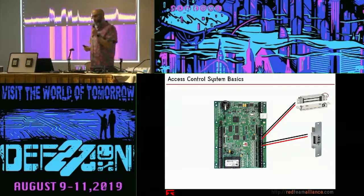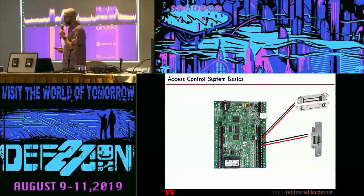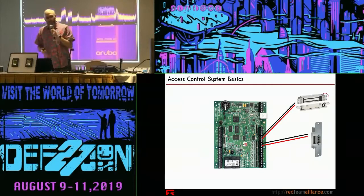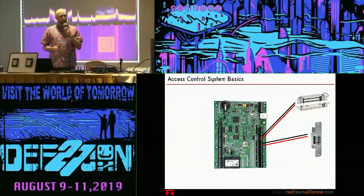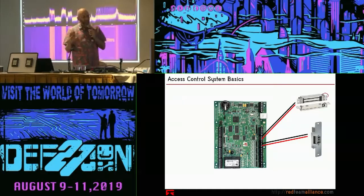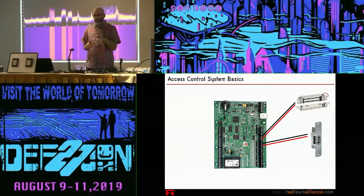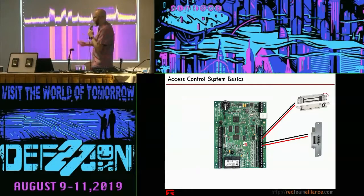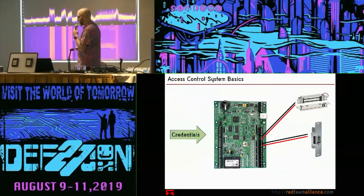What we're looking at here is a door controller. A door controller is a fancy term for an embedded Linux device with some relays on it. This door controller is actually what's in charge of all the logic that takes place in an access control system. Every time you open a door, every time you close a door, every time you present a card to the reader, there is a signal or a series of signals monitored by the door controller, and that's making decisions.